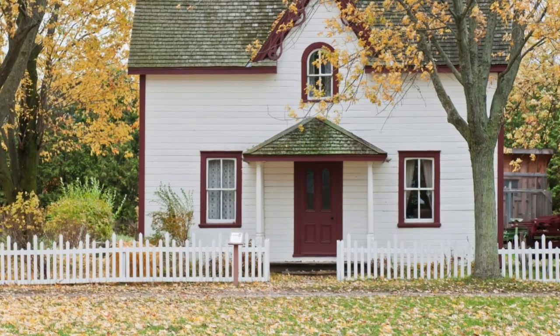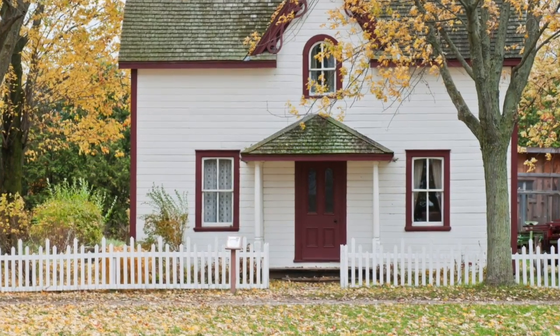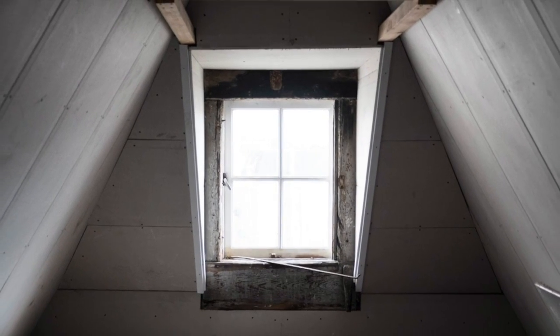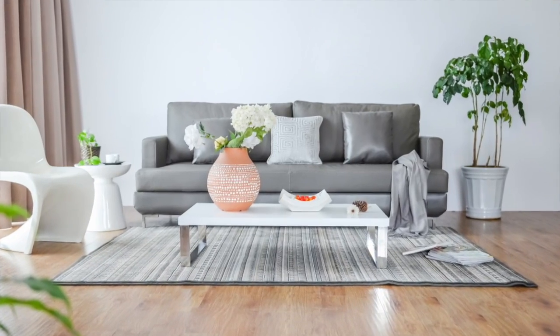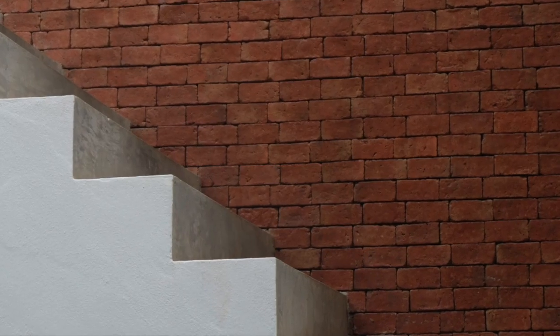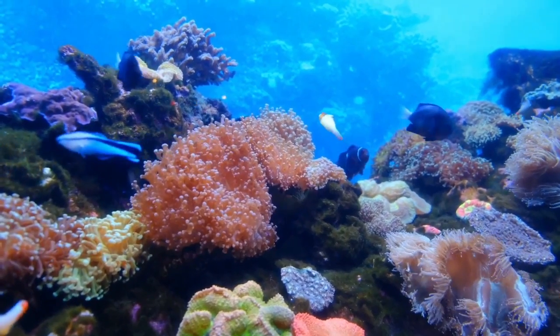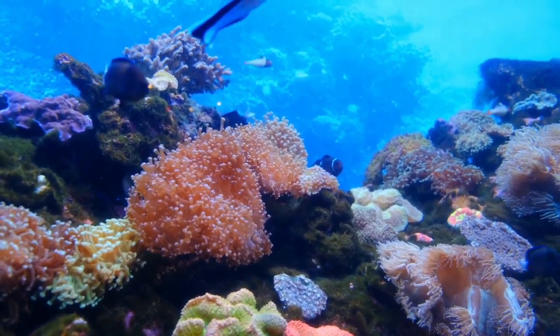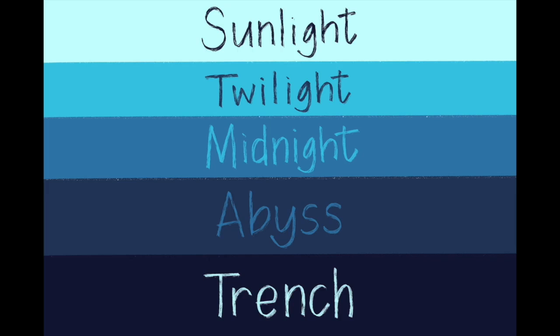Now we're going to learn about ocean zones. Let's get ready. Let's talk about where a mermaid lives. As you know, people's homes can sometimes have different layers — you could have an attic, a living room, or a basement. The ocean is a home to many creatures, and just like people's homes, it has layers. Can you guess how many layers the ocean has? If you guessed five, you're right. The ocean has five distinct layers called zones.